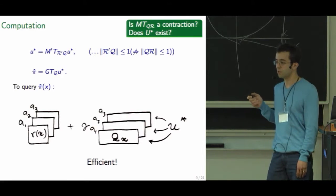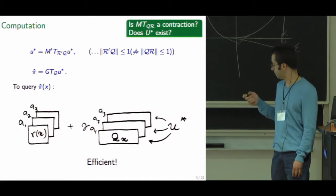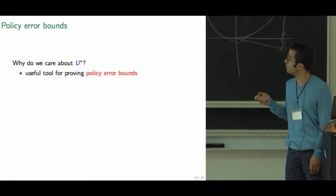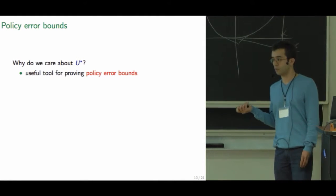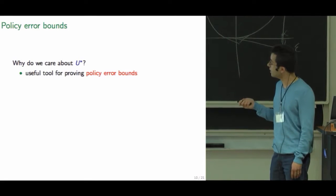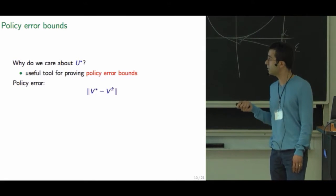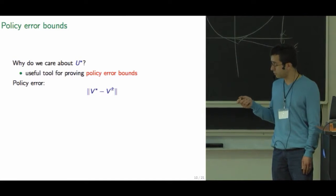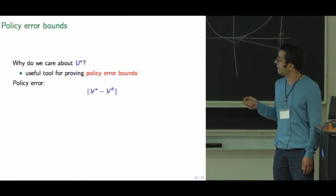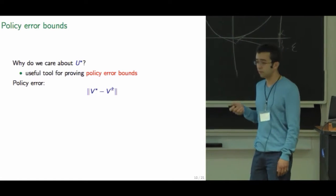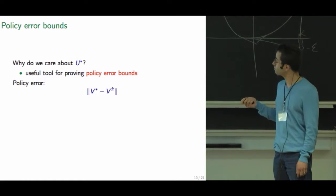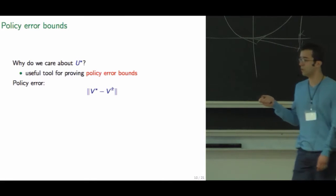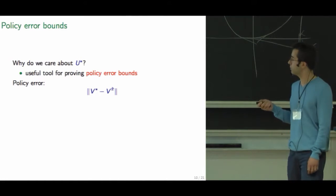We might not really care about u star except from the theory point of view, because it's useful to get policy error bounds. And what is the policy error? It's simply the difference between the best you can do in terms of collecting reward, which is the optimal value function, and the value of this pi hat policy that we computed. The difference is vector valued, so we have to choose some norm to turn this into a number that we're going to care about.